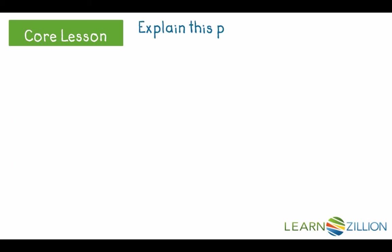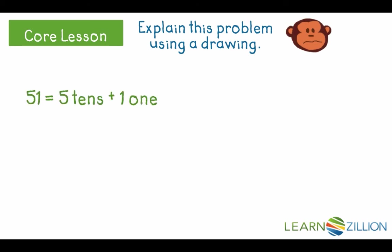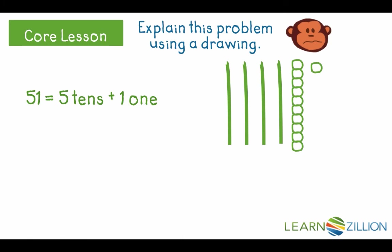We also could explain the problem to the monkey using a drawing. 51 is 5 tens and 1 one. The lines are 10 sticks and the circles are ones cubes. But notice that I drew 1 of the 10 sticks as 10 ones cubes connected together, because I'll know I'll have to use some of those ones when I subtract.